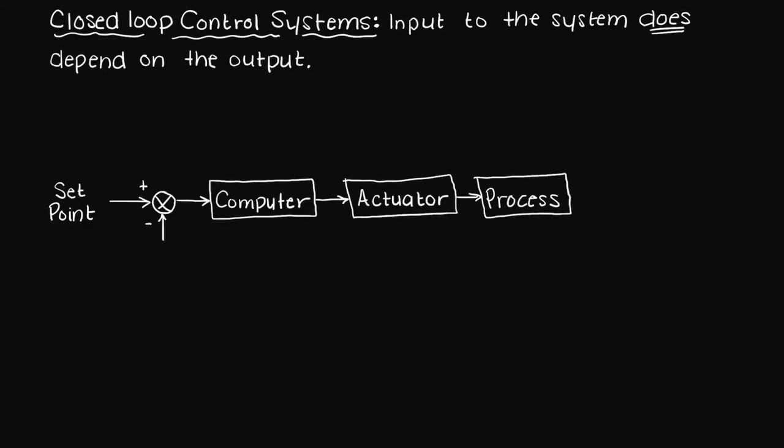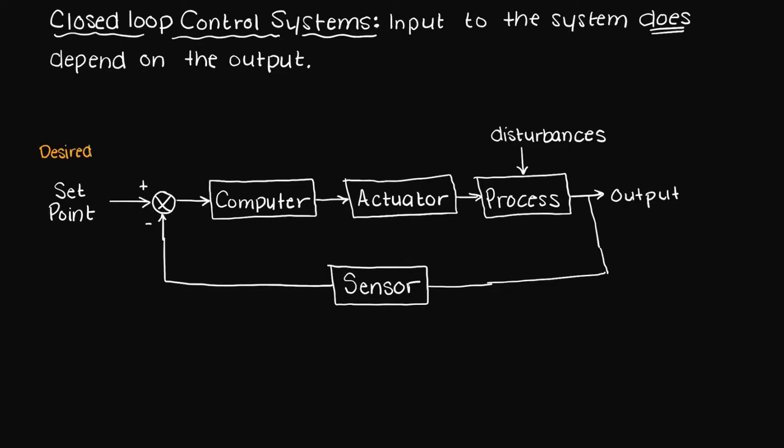Let's draw a feedback control loop to better understand how a closed loop control system actually works. So as we can see here, it all begins with the setpoint.